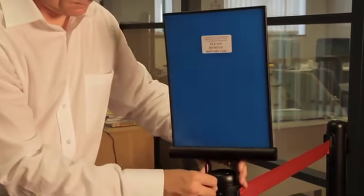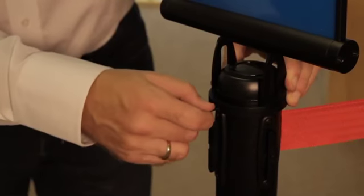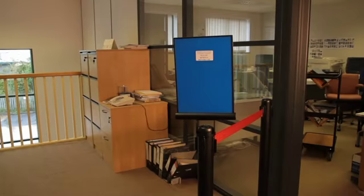Accessories such as an A4 sign holder is easily fitted using an Allen key, which is supplied with the sign holder. Although red, black and blue belts are standard, other colours are available on request.